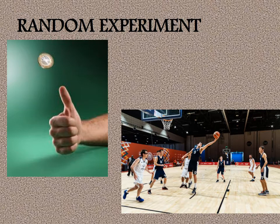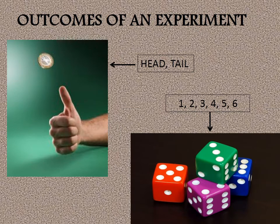You cannot control the outcome or the result that you will be getting for that experiment. That is why these experiments or activities are called random experiments. Similarly, in a basketball match, you will not be able to predict in advance who will win — that will be decided only once the match ends.